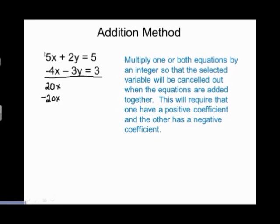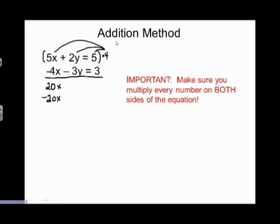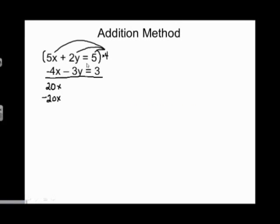For the first equation, I need to multiply so I get 20x. What do I multiply 5 by to get 20? Multiply by 4. It's important to multiply the 4 by every term on both sides of the equation. So 4 times 5x gives 20x, 4 times positive 2y gives plus 8y, and 4 times 5 gives 20. The new first equation is 20x plus 8y equals 20.